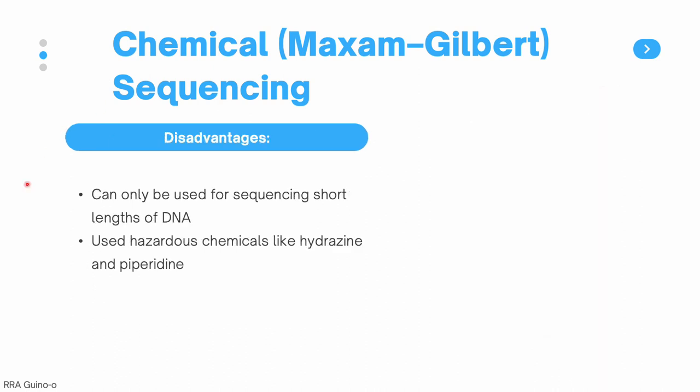Chemical sequencing also comes with some disadvantages. It can only be used for sequencing short lengths of DNA, and it uses hazardous materials like hydrazine and piperidine, meaning you need special equipment and specially trained individuals to perform chemical sequencing.